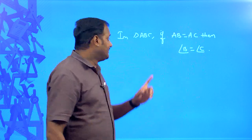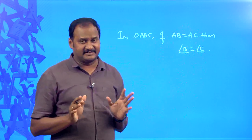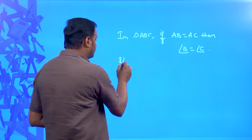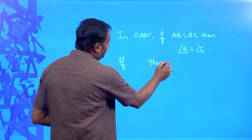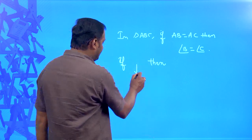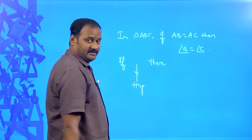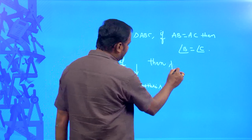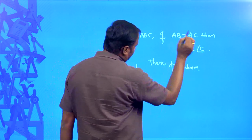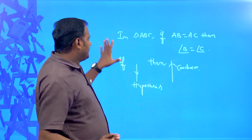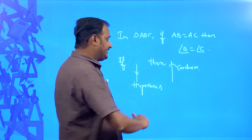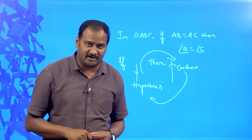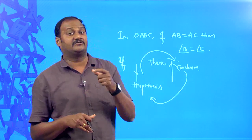The second simple statement is: in triangle ABC, angle B is equal to angle C. These two simple statements are connected by two small words — 'if' and 'then'. The statement between 'if' and 'then' is said to be the hypothesis, and the statement after 'then' is said to be the conclusion. If you write the conclusion as hypothesis and hypothesis as conclusion, then a new compound statement is formed, which is said to be the converse of the given statement.